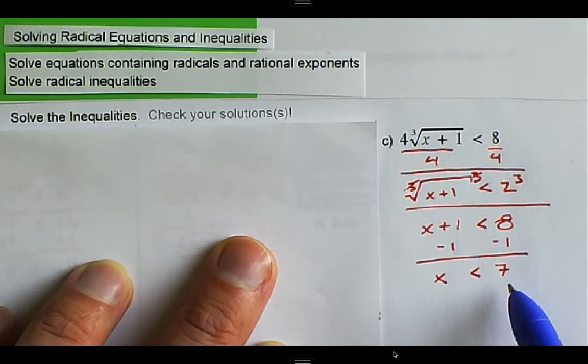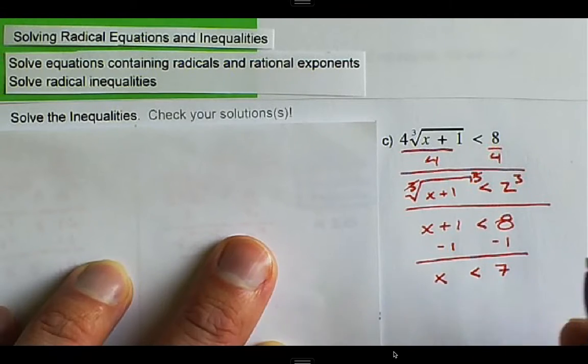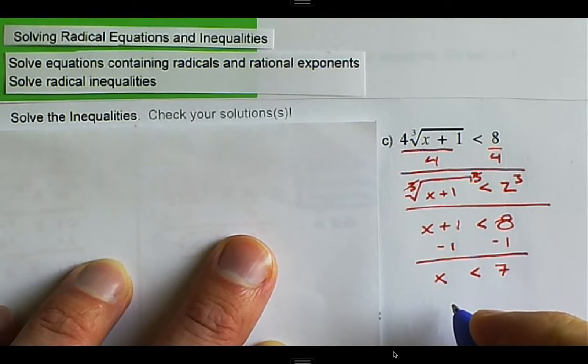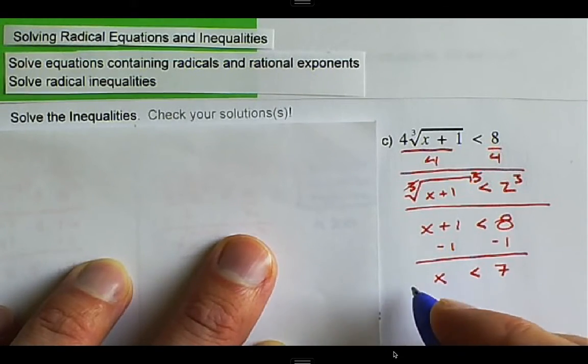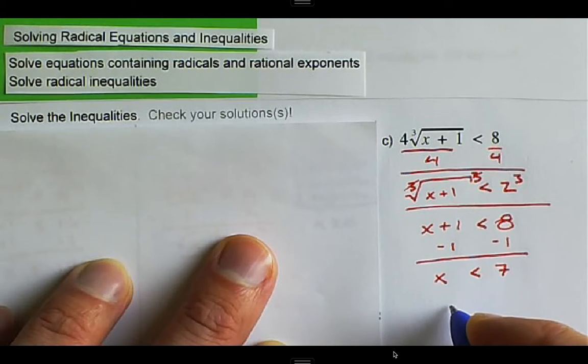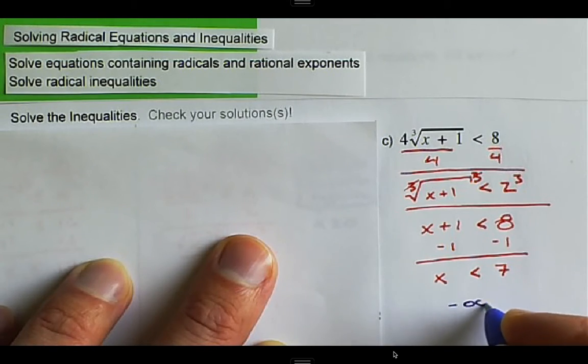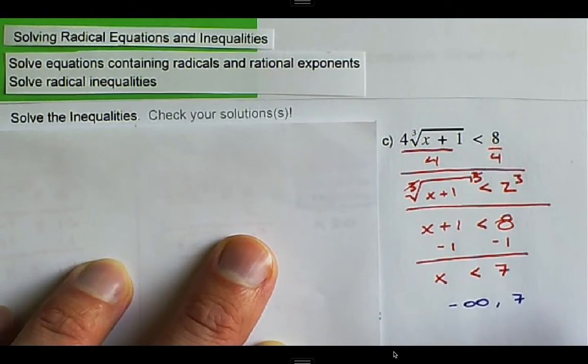And we can write that in interval notation, which 7 is the highest that we can be. So we're going to go from 7, and we're going to go all the way to negative infinity. And we're going to go negative infinity to 7.